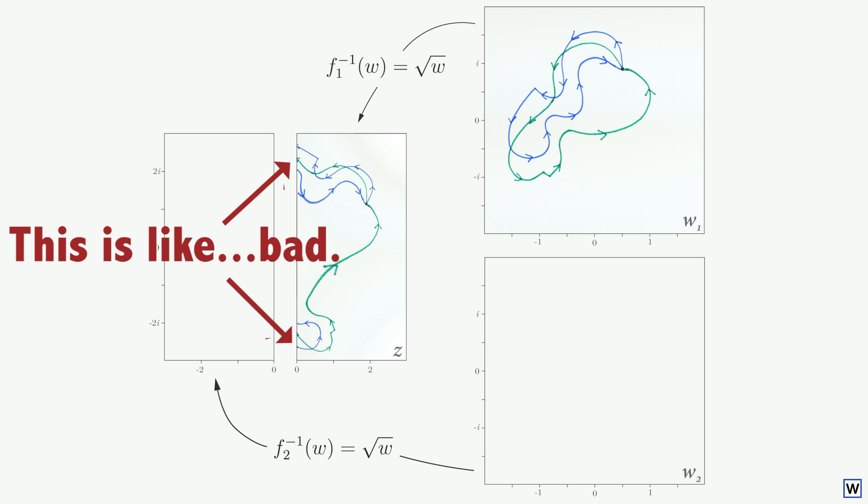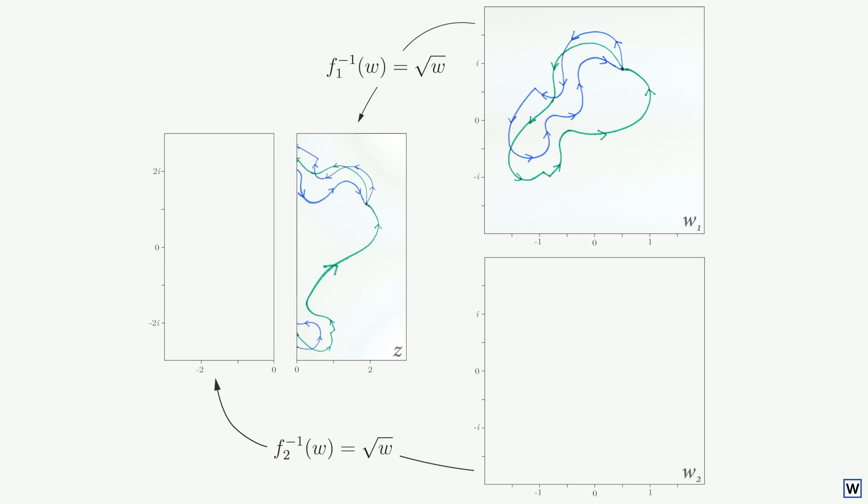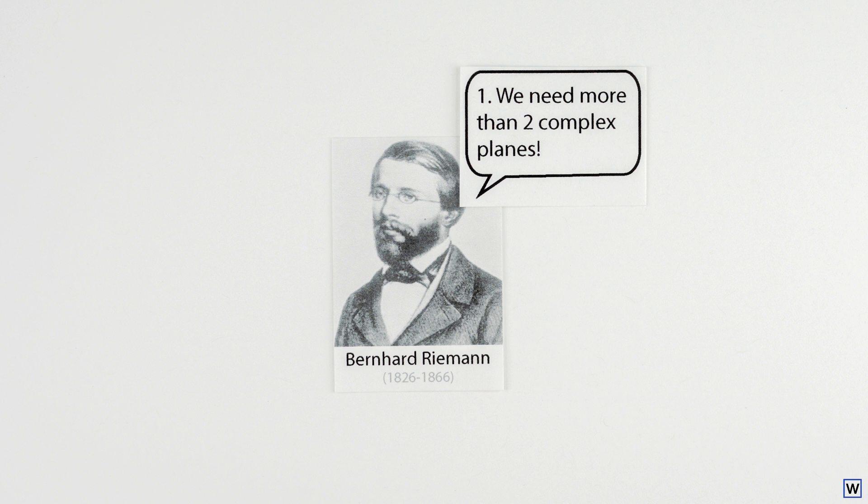Functions of complex variables are a big part of modern mathematics and science. And if our functions are jumping around like this, we can't do important things like take derivatives and integrals. So we've fixed the multi-valued problem by splitting our multi-function into branches — our function is now one-to-one — but in the process, we've introduced some serious issues. Thus far, Riemann's solution is not looking so great.